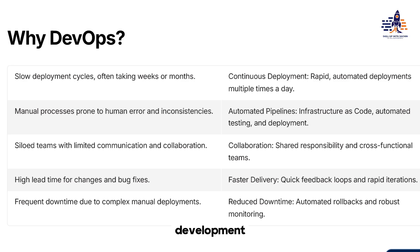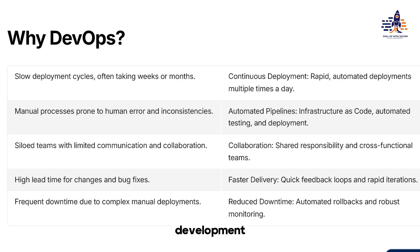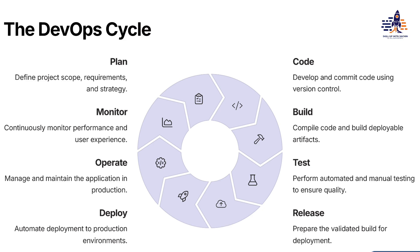Yes, as you said, DevOps has continuous development teams, testing teams, and all those things. But one basic difference is: DevOps bridges the gap between the development and operations teams, whereas Agile bridges the gap between the developers and customers — the conflict between developers and the client.